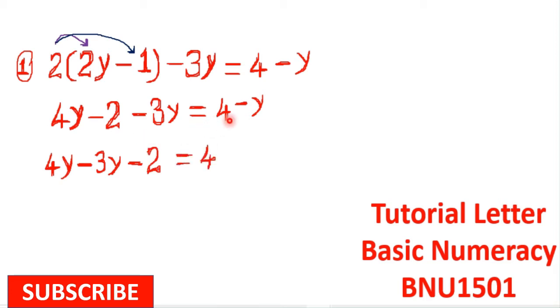From there, 4y - 3y equals y, so these two terms become y, and then -2 equals to 4 - y.